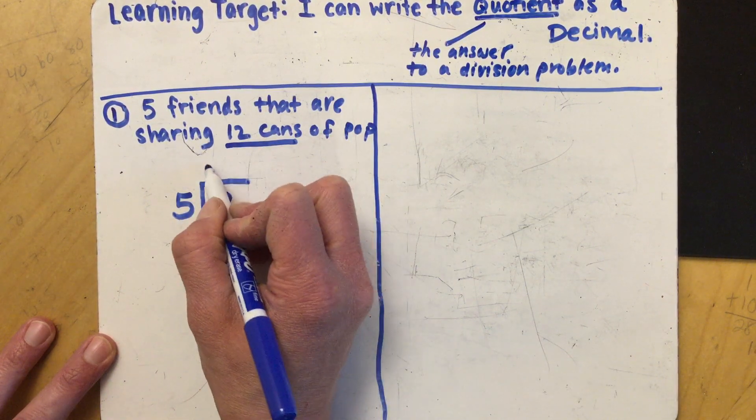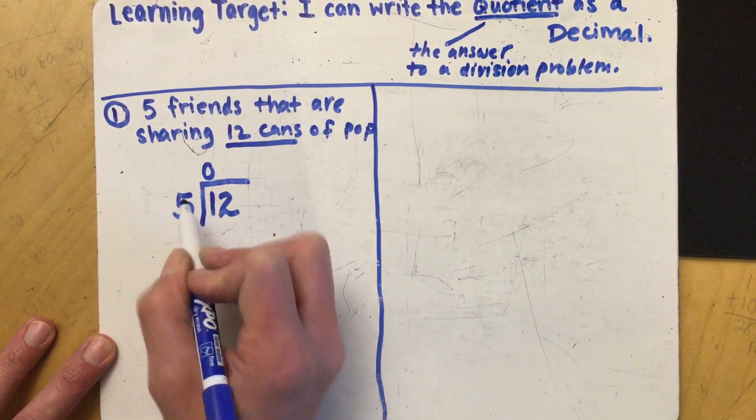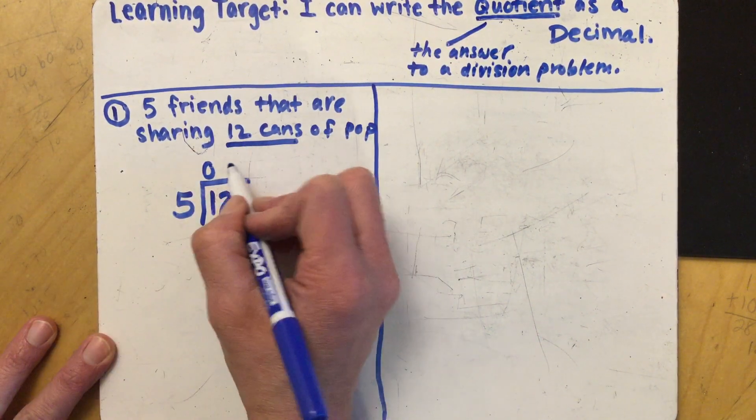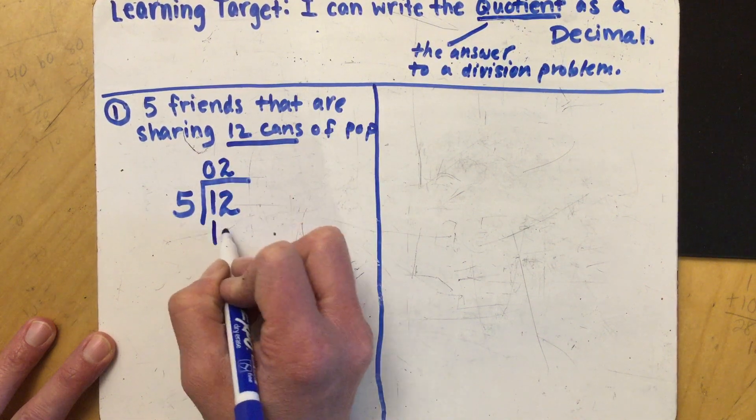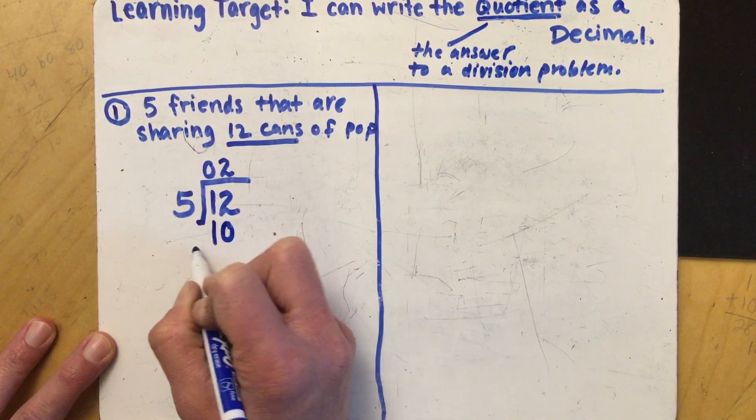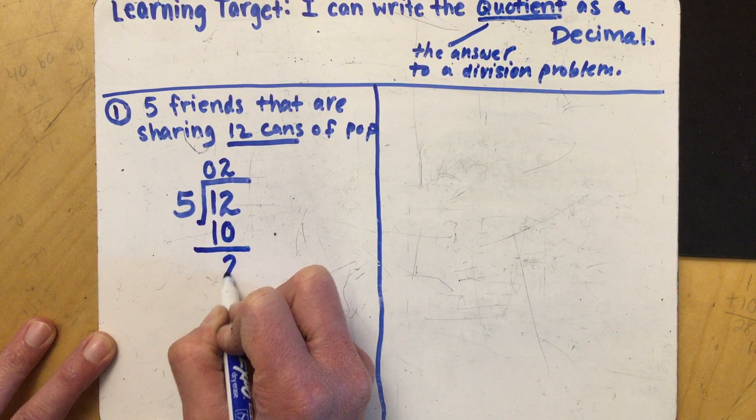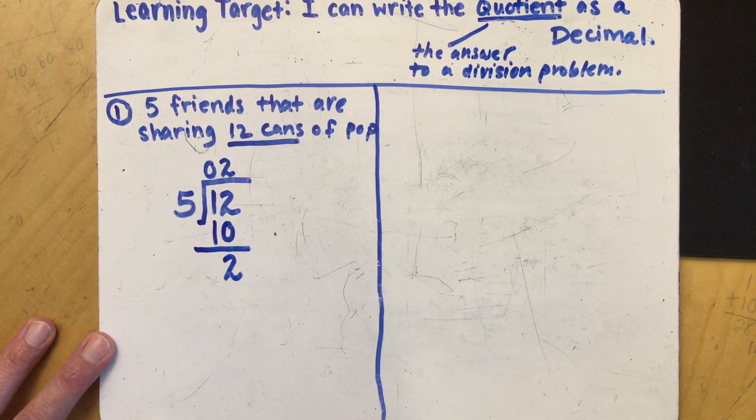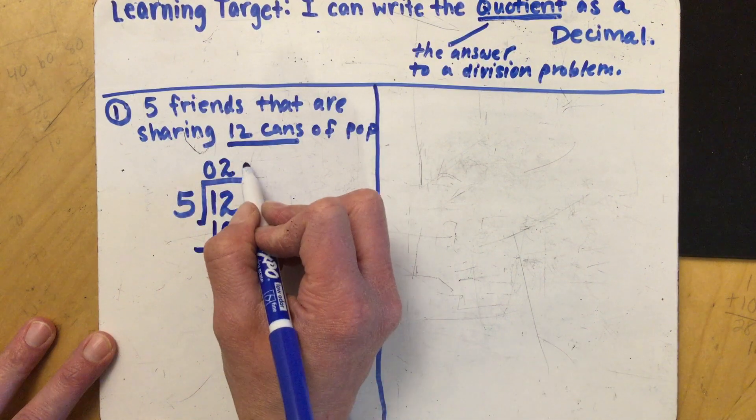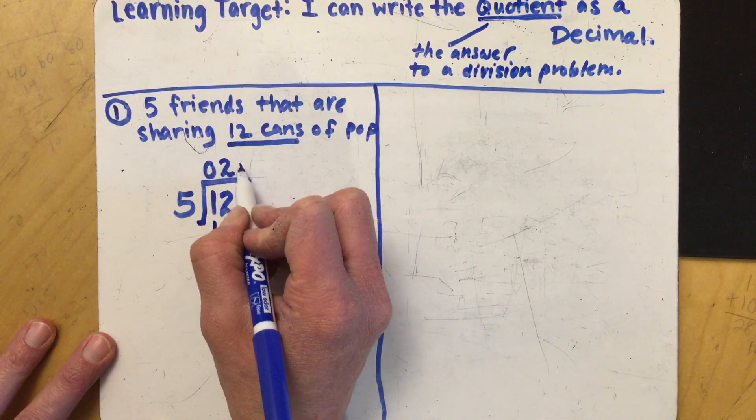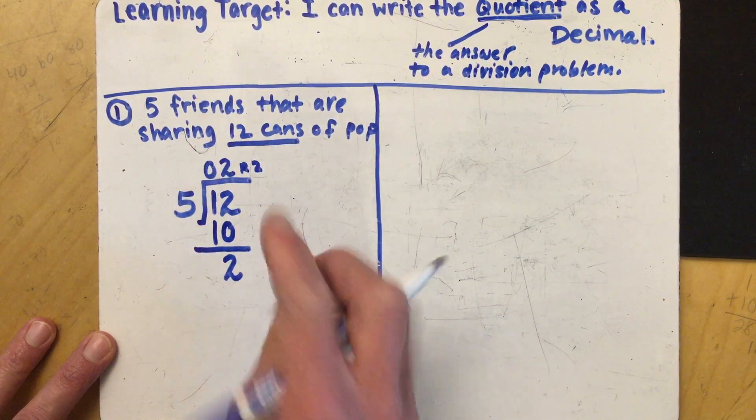Five cannot go into one, but five can go into 12 and that can go in two times. So 2 times 5 is 10. Do some subtraction and we have two left over.